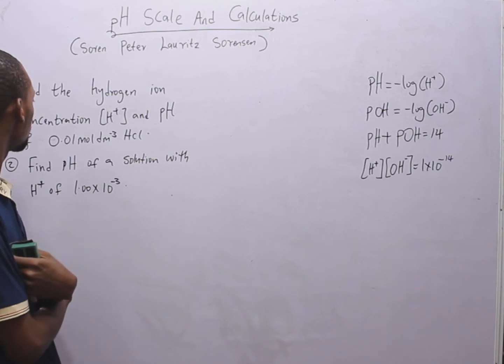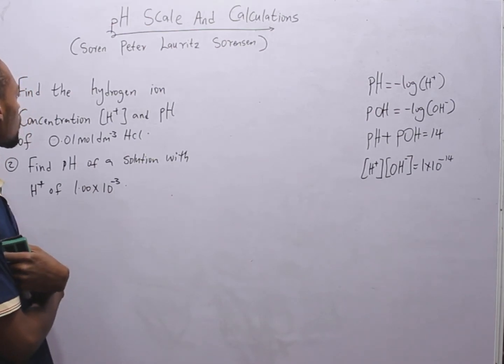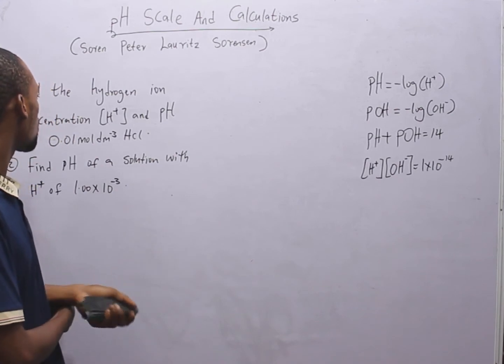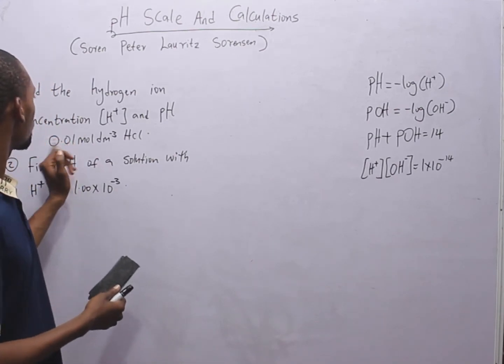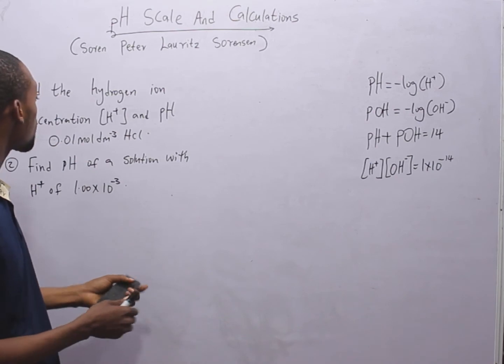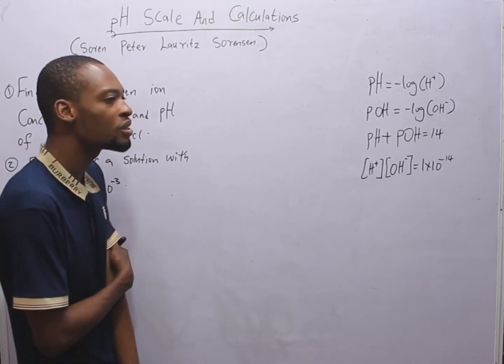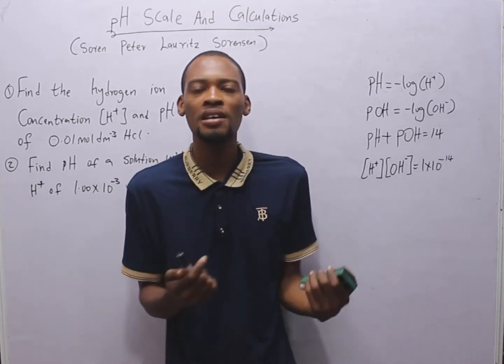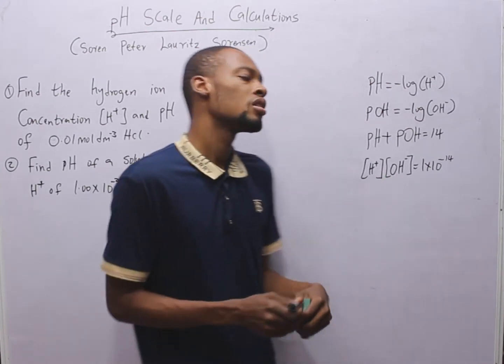Are we given the pH? No. That is what we are looking for. We are looking for the hydrogen ion and we are looking for the pH. And we are told that we have a solution of 0.01 mol per dm cube of HCl. This means HCl dissociates, right?